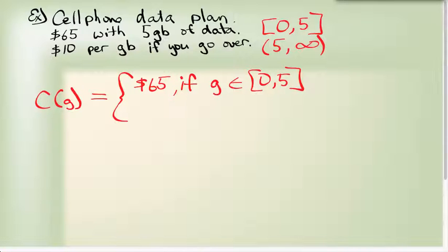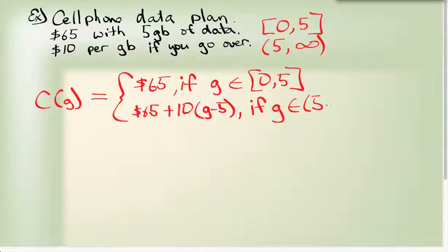Our cost is going to go up. So for the second one, it's going to start at sixty-five dollars plus an extra charge. So it's going to be plus ten dollars. Now for every gigabyte over five, so G minus five. And this one is valid if G is an element all the way from five and up, five to infinity.